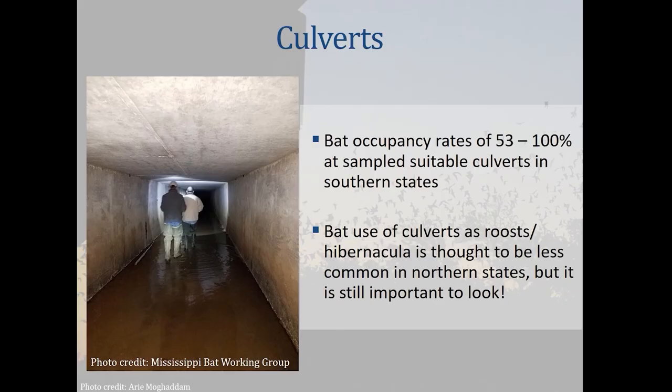Culverts are really dark and have cool, stable temperatures — sort of cave-like. In the Southeast, like in Georgia, culverts are actually more commonly used by bats in the wintertime than in the summer because they stay really cool and cave-like with stable temperatures. Especially in parts of the state where there aren't a lot of caves, we tend to find bats in culverts a lot.